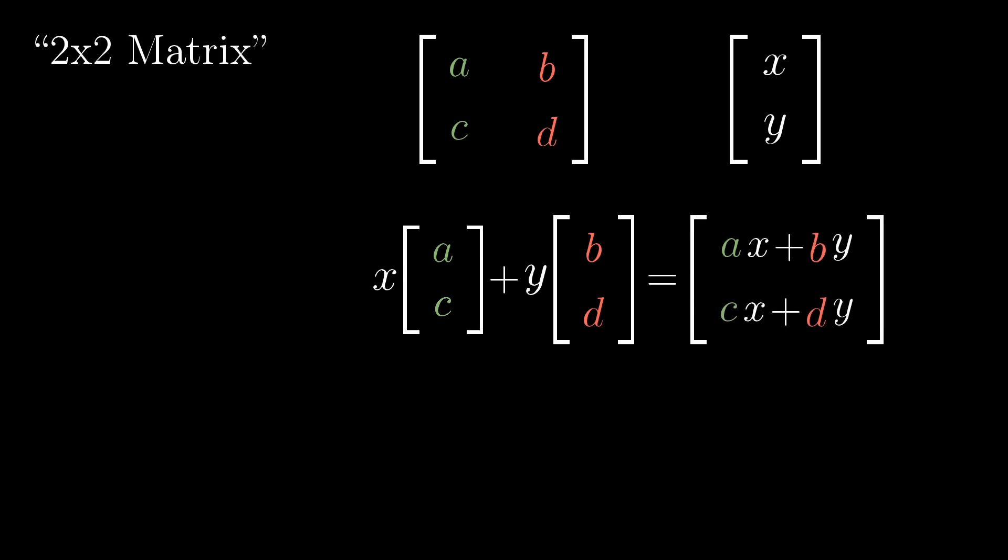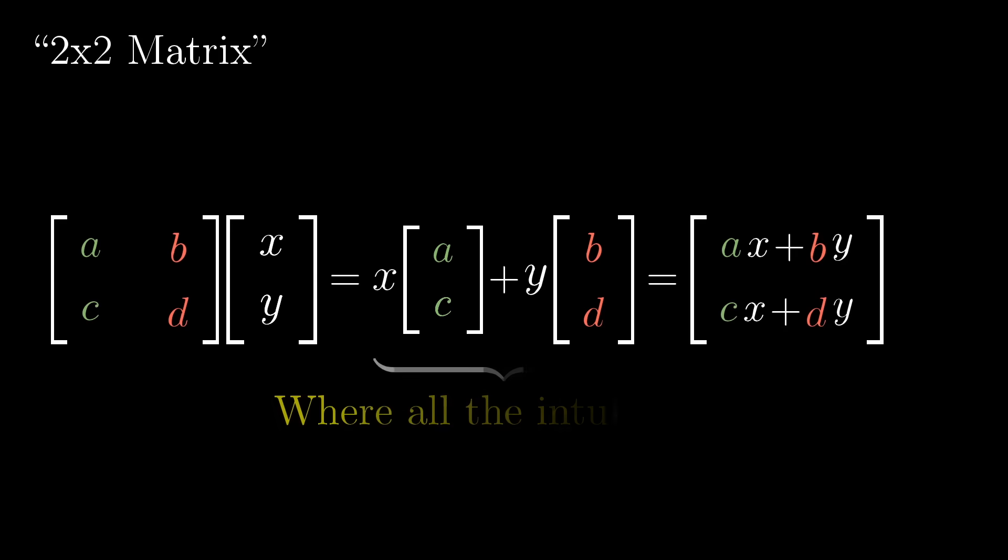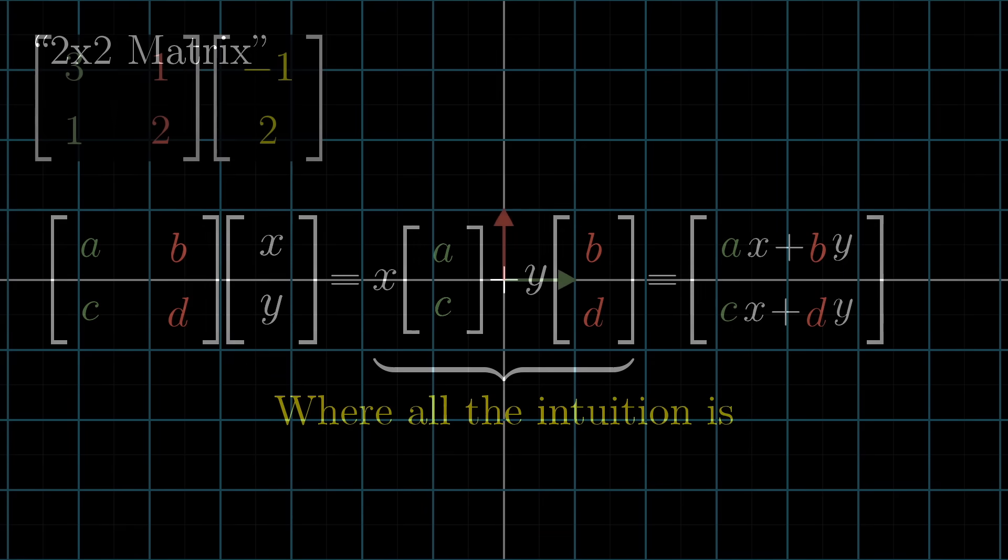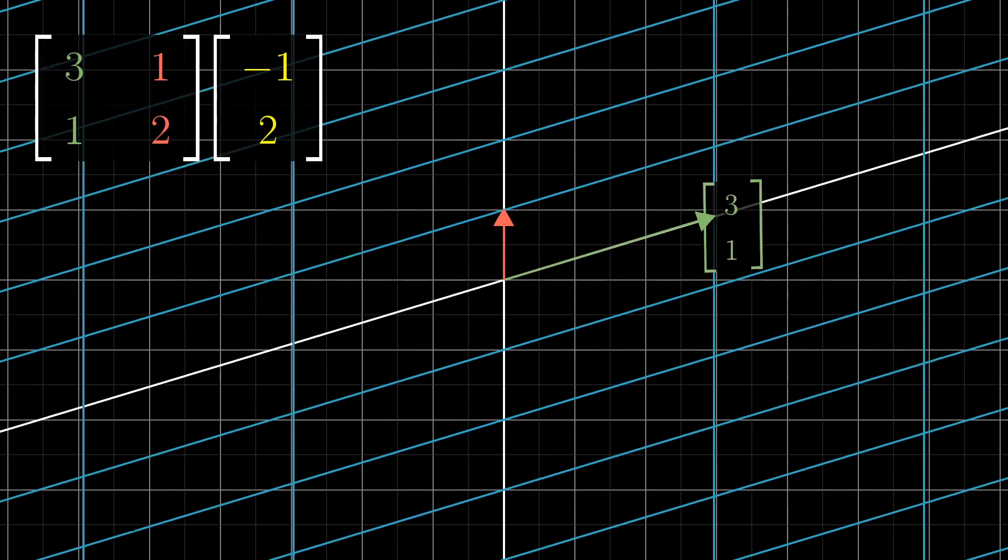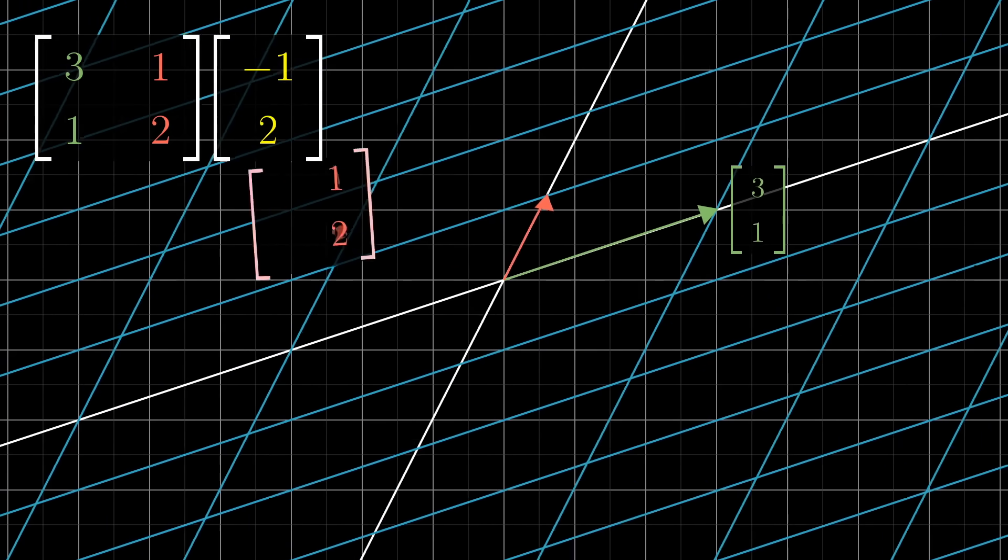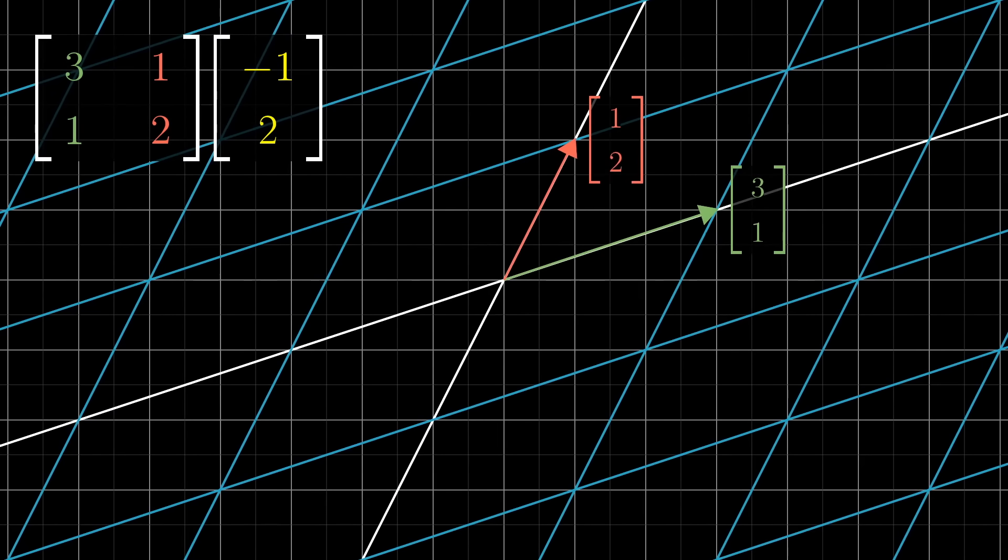You could even define this as matrix vector multiplication when you put the matrix on the left of the vector like it's a function. Then you could make high schoolers memorize this without showing them the crucial part that makes it feel intuitive. But, isn't it more fun to think about these columns as the transformed versions of your basis vectors and to think about the result as the appropriate linear combination of those vectors?